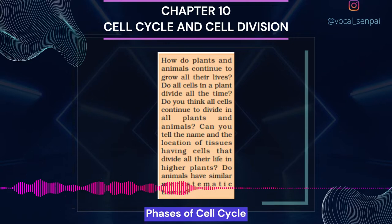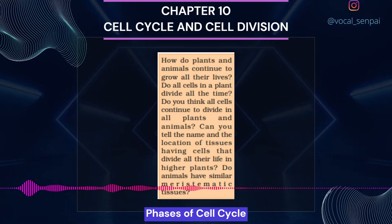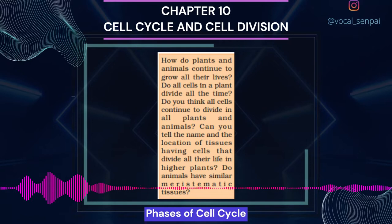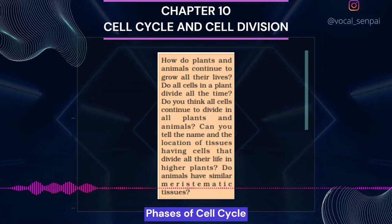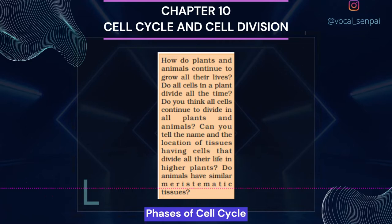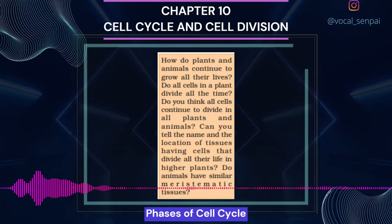The interphase is divided into three further phases: G1 phase (Gap 1), S-phase (Synthesis), and G2 phase (Gap 2). G1 phase corresponds to the interval between mitosis and initiation of DNA replication. During G1 phase, the cell is metabolically active and continuously grows but does not replicate its DNA. S- or Synthesis phase marks the period during which DNA synthesis or replication takes place. During this time, the amount of DNA per cell doubles — if the initial amount of DNA is denoted as 2C, it increases to 4C. However, there is no increase in chromosome number; if the cell had diploid (2N) chromosomes at G1, even after S-phase the number of chromosomes remains the same, i.e., 2N.